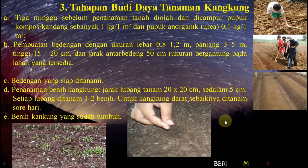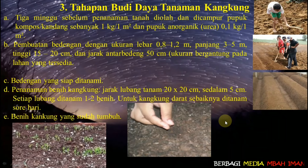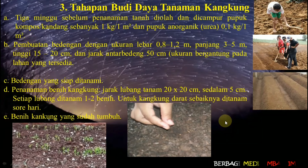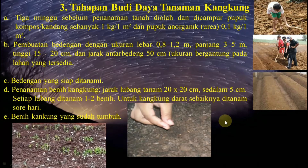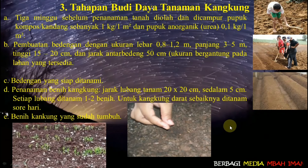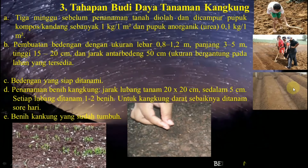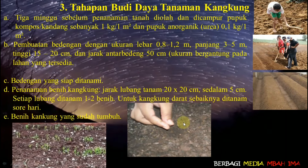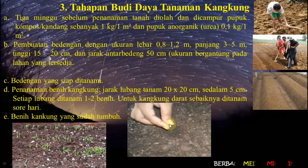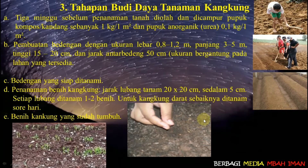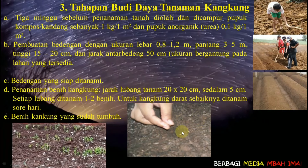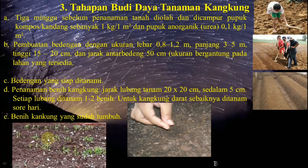Pembuatan bedengan dengan ukuran lebar 0,8 sampai 1,2 meter, panjang 3–5 meter, tinggi 15–20 cm, dan jarak antar bedengan 50 cm. Ukuran tergantung pada lahan yang tersedia. Penanaman benih kangkung dengan jarak setiap lubang 20×20 cm sedalam 5 cm, setiap lubang ditanami 1–2 benih. Untuk kangkung darat sebaiknya ditanam sore hari.